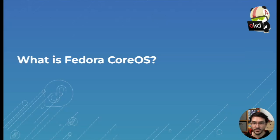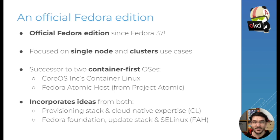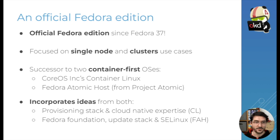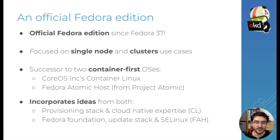So first, what is Fedora CoreOS? Fedora CoreOS is an official Fedora edition since Fedora 37, so it's been quite a while now. The goal of Fedora CoreOS is to focus on the single node and the cluster use case — we're more interested in the cluster use case for the OKD use case. Fedora CoreOS itself is the successor to two container-first operating systems: Fedora CoreOS Inc's Container Linux, and the Fedora Atomic Host project from Project Atomic.